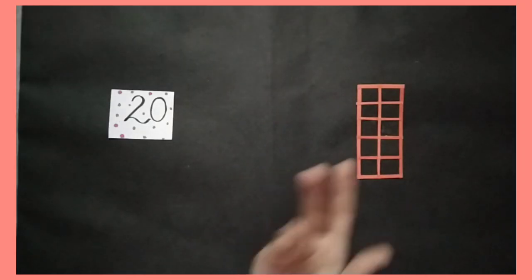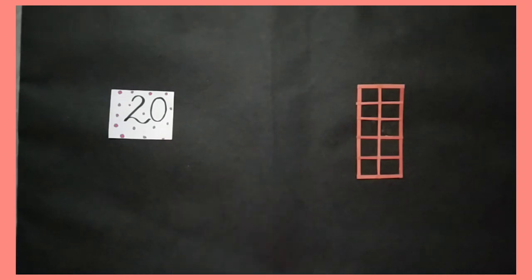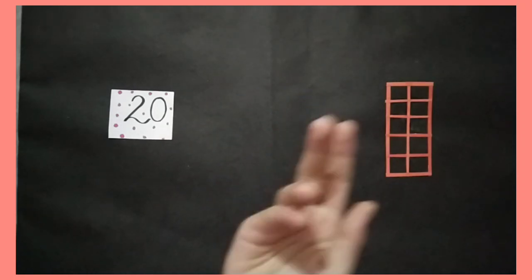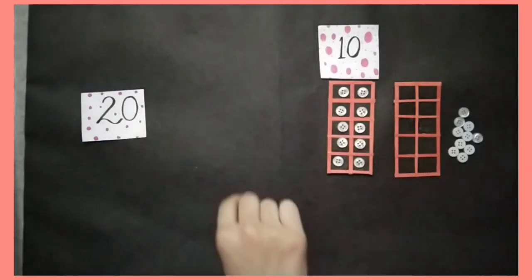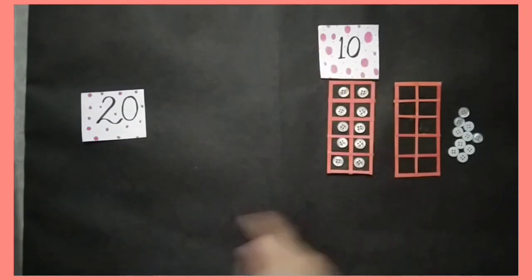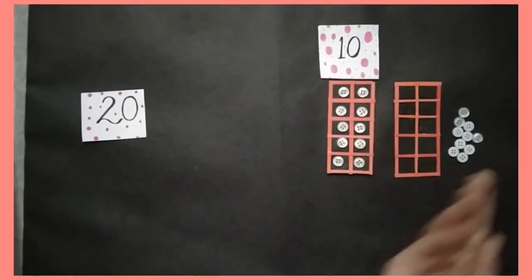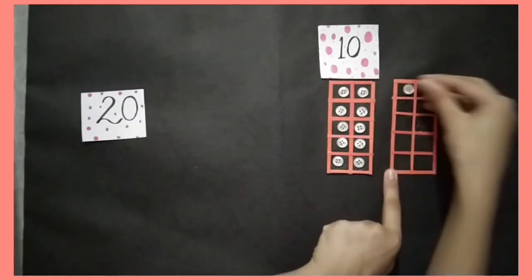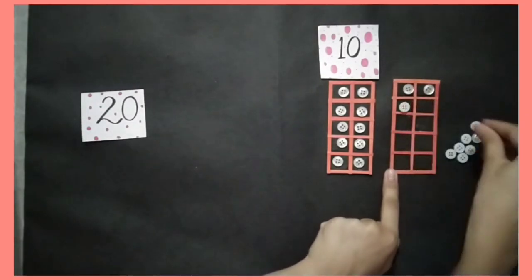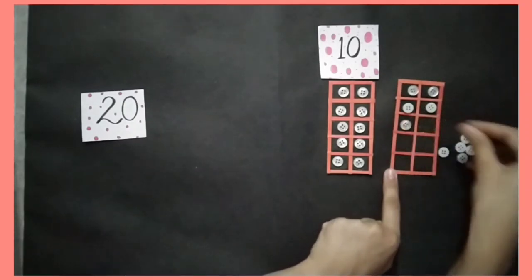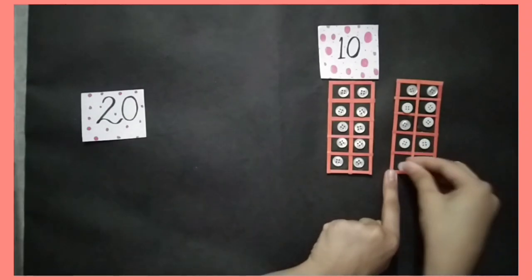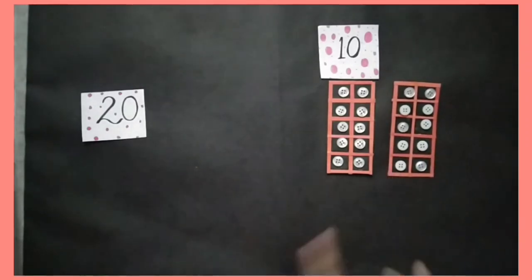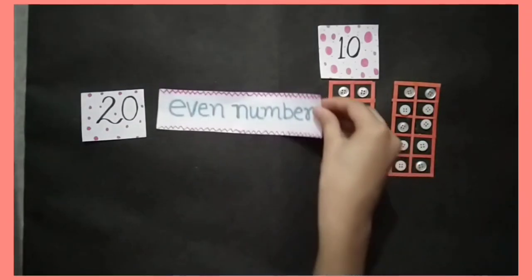Now we will take the example of number 20. We will make pairs of all 20 buttons. Yesterday we learned that 10 is an even number, so we will count from 10 onwards: 11, 12, 13, 14, 15, 16, 17, 18, 19, 20. All the pairs are made. It means that 20 is an even number.